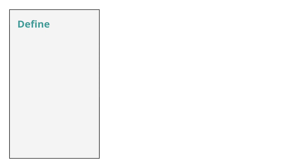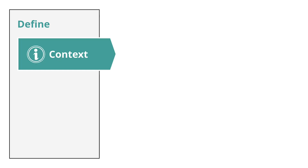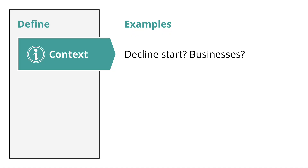You shed light on the problem by defining it using three types of clarifying questions. The first one is context — questions about situations, both internal or external, that the company is facing. You can ask, for example: this profitability drop, when did it start? Is it recent or is it a long-term trend? And which businesses is the company in — is the company in cargo, maintenance, or catering?